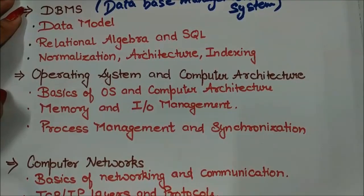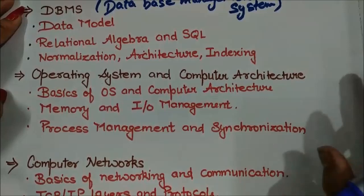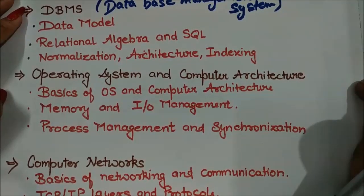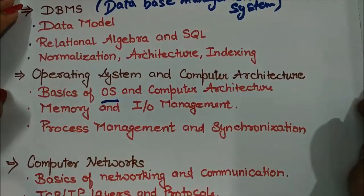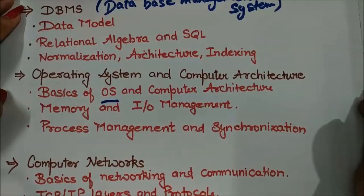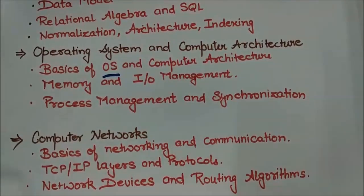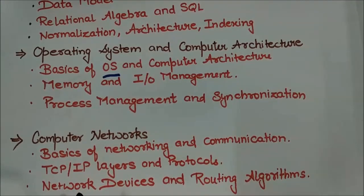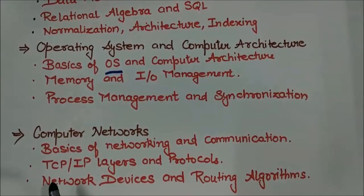The second category is operating systems and computer architecture, where you need to understand basic concepts of operating systems and computer architecture, memory and input/output management, how protocols work for I/O, and process management and synchronization. The third topic area is computer networks, covering basic concepts of networking and communication, TCP/IP layers and protocols, network devices, and routing algorithms.